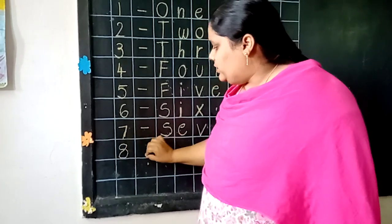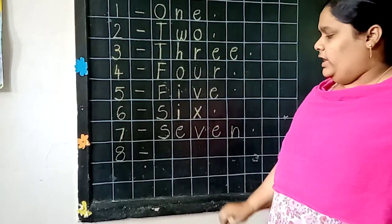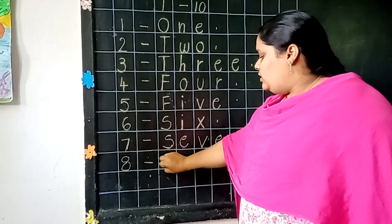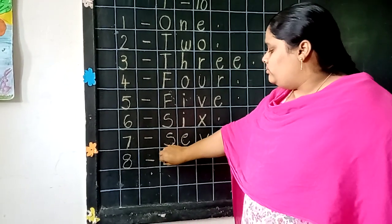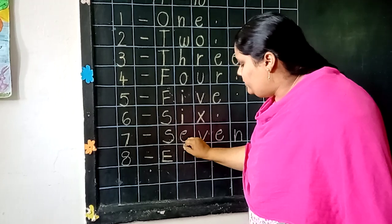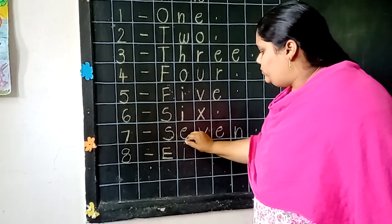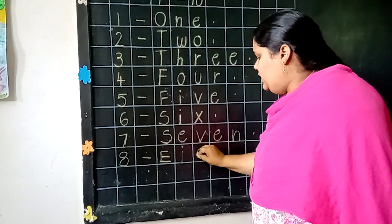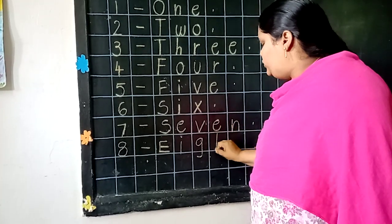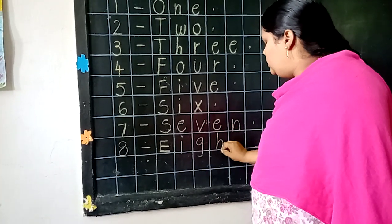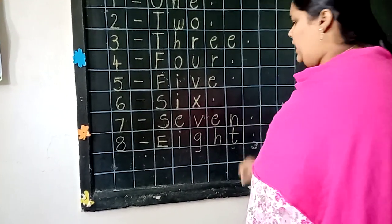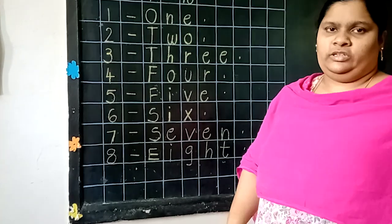8. What is the spelling of 8? E, I, G, H, T. Ok.